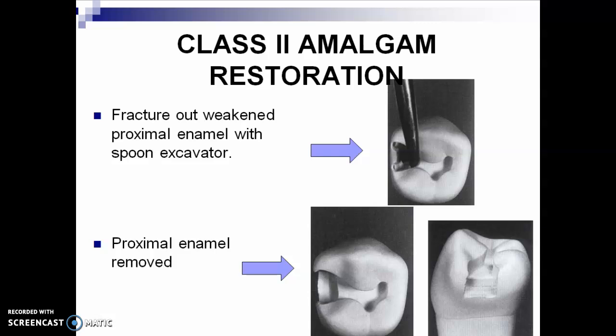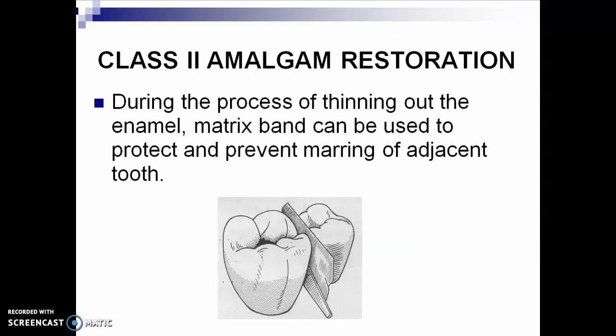Fracture out and weaken the proximal enamel with your spoon excavator, and then the proximal enamel is removed. By using hand-cutting instruments, if the proximal wall is already thin, you prevent injury to the adjacent tooth — unlike when you use your burr to remove that wall. During the process of thinning out the enamel, a matrix band can be used to protect and prevent marring of the adjacent tooth. A very common mistake when you do Class 2 is that the adjacent tooth gets drilled out — so instead of helping the patient, you create more damage.